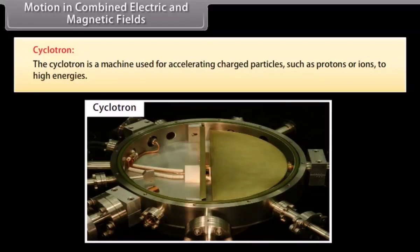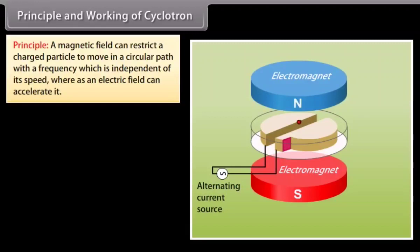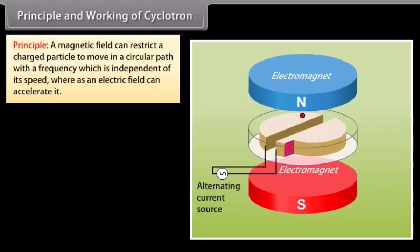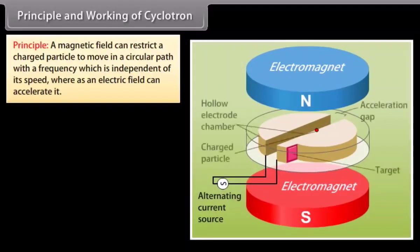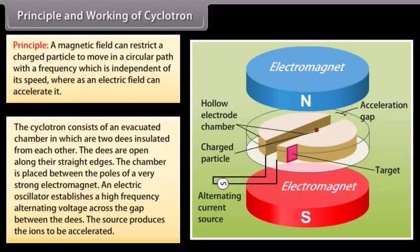Cyclotron: The cyclotron is a machine used for accelerating charged particles such as protons or ions to higher energies. Principle and working: The cyclotron works on the principle that a magnetic field can restrict a charged particle to move in a circular path with a frequency which is independent of its speed, whereas an electric field can accelerate it.